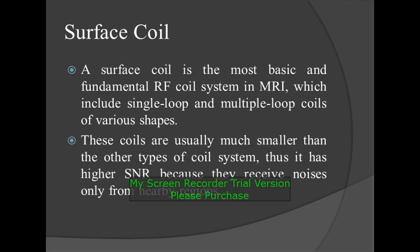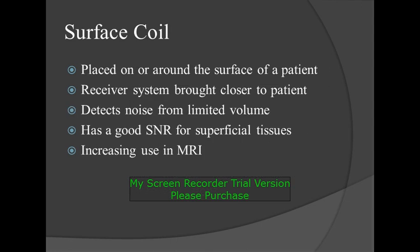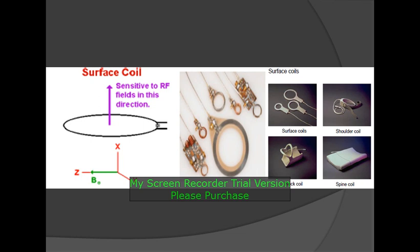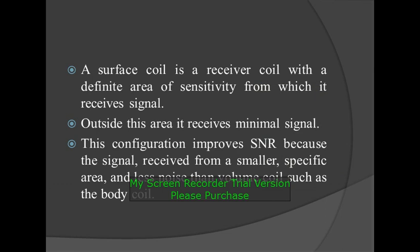Surface coil: a surface coil is the most basic RF coil system in MRI, which includes single-loop and multiple-loop coils of various shapes. These coils are usually much smaller than other types of coil systems, thus they have higher SNR because they receive noise only from nearby regions. Surface coils are placed on or around the surface of a patient, bringing the receiver system closer to the patient. They detect noise from a limited volume and have good SNR for superficial tissues. A surface coil is a receiver coil with a definite area of sensitivity, and outside that area it receives minimal signal. This configuration provides better SNR because the signal is received from a smaller specific area with less noise than volume coils such as the body coil.